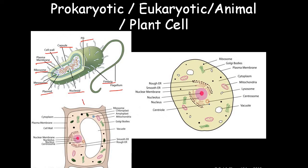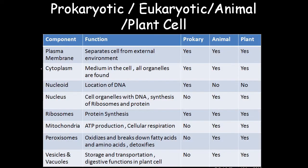These are the plant cell and this is the animal cell — both come under eukaryotic cells. Most of the structures are similar, with some differences that we can see in the next slide. We have divided the comparison by component, function, and the three cell types: prokaryotic, animal, and plant cells.